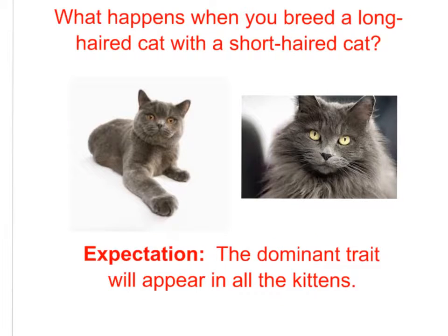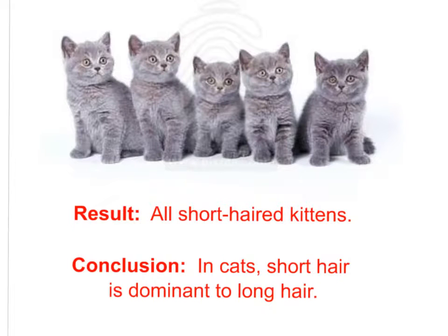So let's review with an example. What if we breed a long-haired cat with a short-haired cat? What would we expect to see if this was following simple Mendelian genetics? We'd expect to see the dominant trait in all of the kittens. Well, let's see what actually happens. The result? All short-haired kittens.